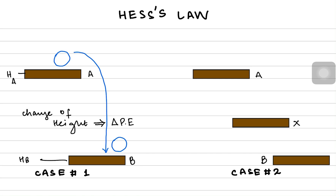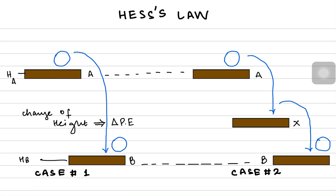In the second case, a similar ball with similar mass is dropped to platform X first and then to platform B. Is the change in height the same? If you notice the diagram, the change in height at the end of the day is still the same — even if the process happens in two steps, the change in potential energy is still the same.